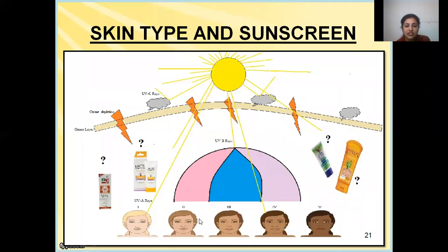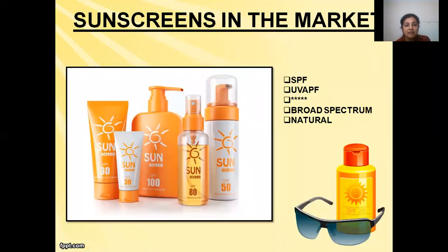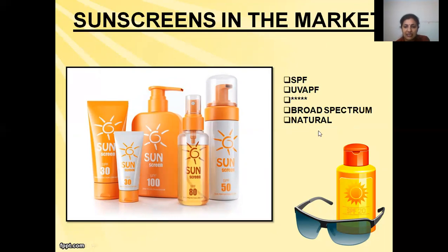Many consumers are uncertain about which sunscreen to buy, because sunscreen selection depends on skin type, which is not known by everybody. Sunscreens in the market vary greatly, with different parameters claimed on their labels. Some have SPF values as high as 100. People think that higher SPF means more photo protection; however, this is a myth to some extent. The various indices written on the label are SPF, UVAPF (UVA protection factor), star indication, broad spectrum, and natural. I shall explain these different indices so that you can choose your sunscreen yourself depending upon your skin type.